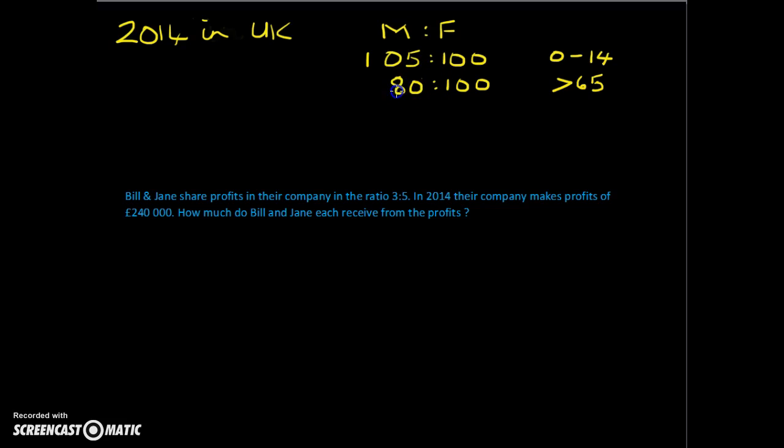So 20 into 80 goes four times, and 20 into 100 goes five times. That's the simplified version. For over 65s in the UK in 2014, there were five females to every four males.